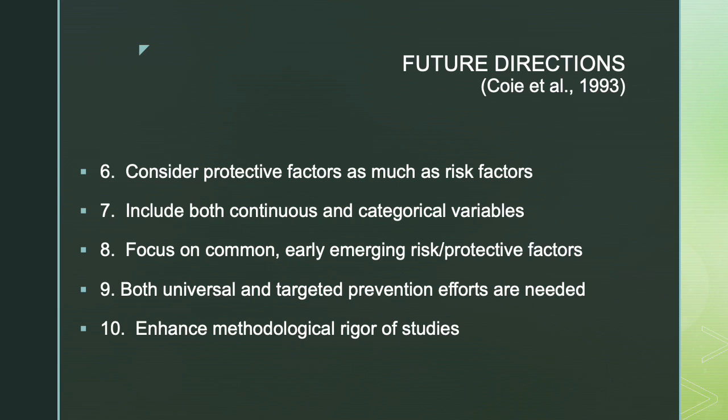Other future directions include considering protective factors as much as risk factors. This may seem like common sense now, but it was a big idea in the early 90s, and a focus on positive psychology may have influenced that movement. Another future direction is to include both continuous and categorical variables. For too long, scientists looked at a yes-no variable — does the person develop the disorder? Over time, scientists have recognized that sometimes using a continuous metric of outcome — how severe the symptoms are, or how long an episode lasts — can be more precise and better markers of effectiveness than absence or presence of a disorder, particularly when that disorder is driven by a biological factor.